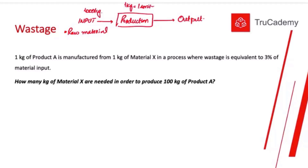If we input 1,000 kilograms of raw material, logically we should get 1,000 units of output. But suppose we only get 900 units of output — what about the remaining 100 units? That remaining amount is wastage. It is very common in production that we have wastage, so those 100 units got wasted during production.